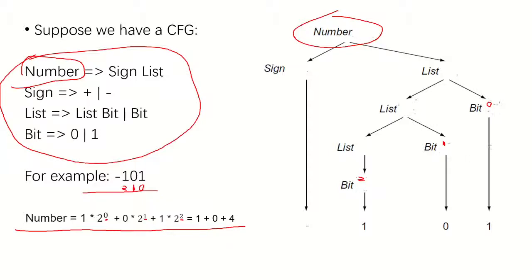Accordingly, we could add another piece of information into this bit. For example, we add the value to this bit. What's the value of this bit? Just this part. So the value of the bit is one, the value of this bit is zero, and the value of this bit is four.